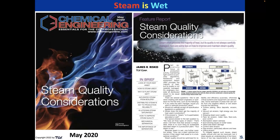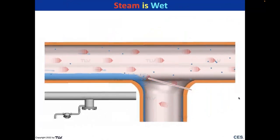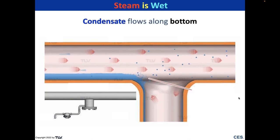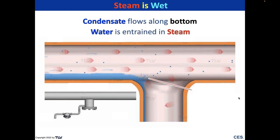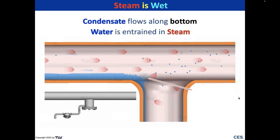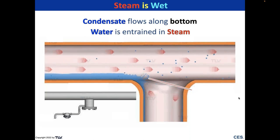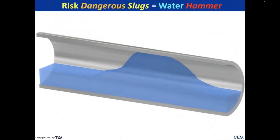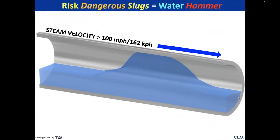If you want to read more about that, I wrote an article in Chemical Engineering two years ago titled 'Steam Quality Considerations,' available on the TLV.com website and Chemical Engineering's website. More accurately describing what steam looks like: you've got condensate flowing along the bottom of the pipe and water entrained in the steam. With superheated steam you probably won't have water entrained in the steam, but you can still have water flowing along the bottom.